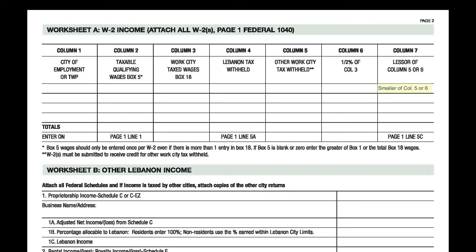Column 7 is completed by comparing the amounts in columns 5 and 6 and entering the smaller of the numbers. In most cases, column 6 is smaller because most people pay more than one-half percent to their work city.